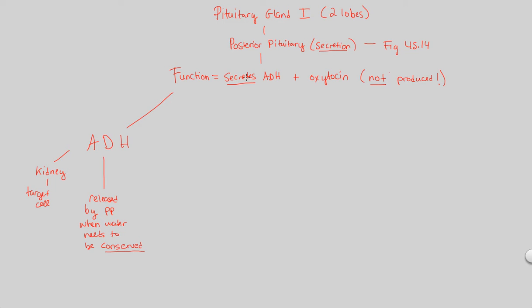In order to do that, we are going to release ADH from the posterior pituitary and send it to the kidney. Once we send it to the kidney, ADH is going to do the following: It makes the collecting tubes, and we'll learn about this in excretion, but for right now, broadly speaking, ADH makes the collecting tubes more permeable to water.